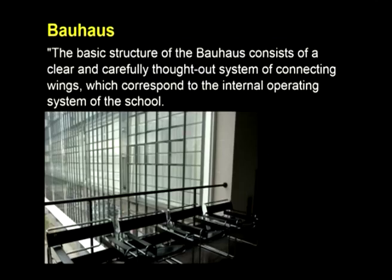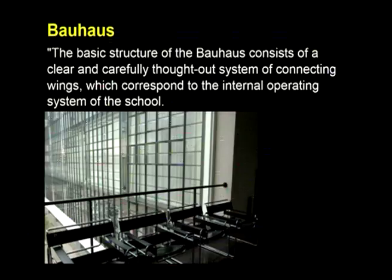The dormitories and school buildings are connected through a wing where the assembly hall and dining room are located with a stage in between. The basic structure of Bauhaus consists of a clear, carefully thought-out system of connecting wings corresponding to the internal operating system of the school. Different functions are interspaced at different locations, often connected by spaces such as cafes, dining rooms, gym rooms or auditoriums, which clearly mark the circulation between the two spaces.